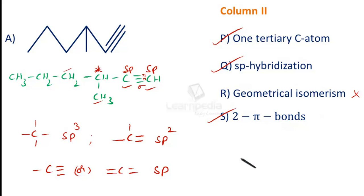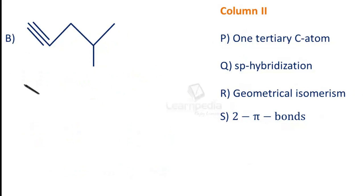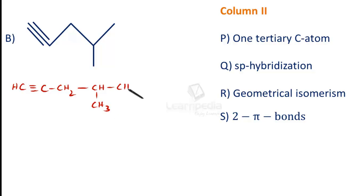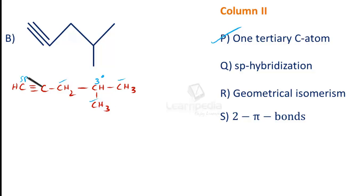Moving to compound B: when extended, the structure is HC≡C-CH2-CH(CH3)-CH3. This particular carbon is a tertiary carbon because it is attached to three other carbons, so property P is matched. A triple bond is present, so both carbon atoms involved are SP hybridized, satisfying property Q.